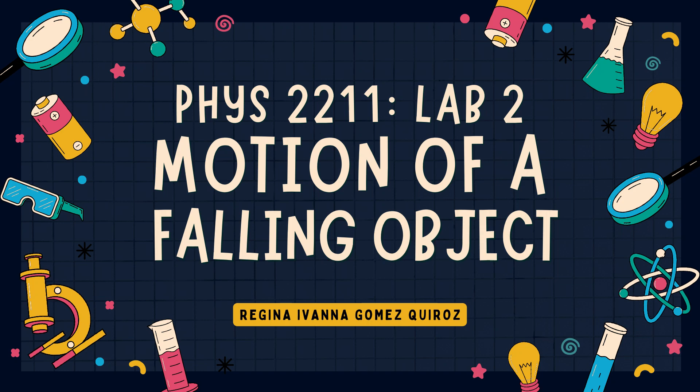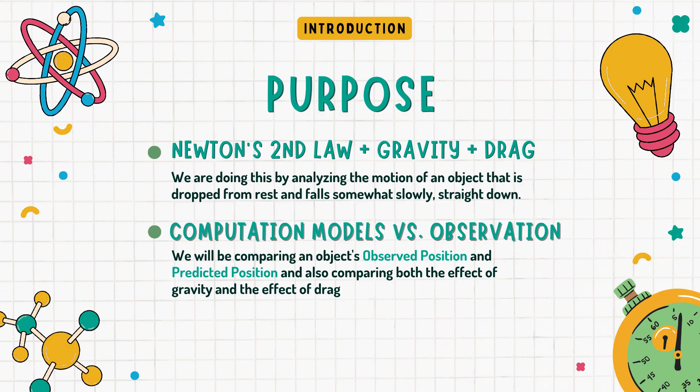This is motion of a falling object. The purpose of this lab is to explore Newton's second law when gravity and drag are also involved. We're going to be doing this by analyzing the motion of an object that is dropped from rest and falls somewhat slowly and straight down.